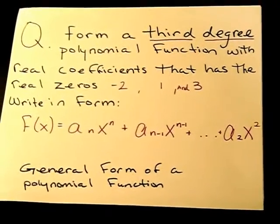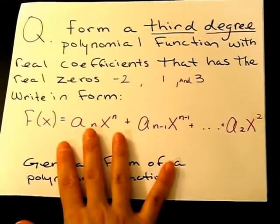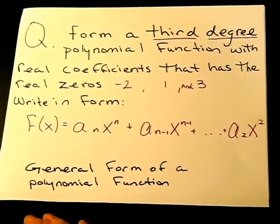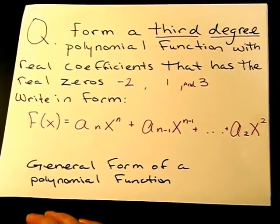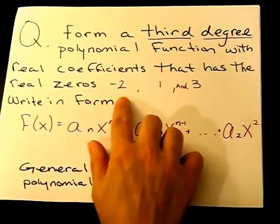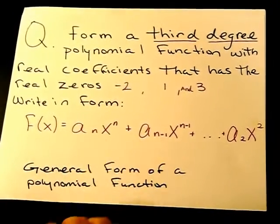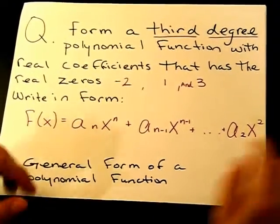Hi, my name is Shawna, and I'm going to find the solution to this question, which is form a third-degree polynomial function with real coefficients that has the real zeros negative 2, 1, and 3. It needs to be written in this form, which is the general form of a polynomial function.